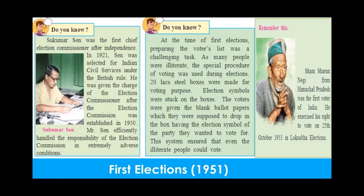He was given charge as Election Commissioner after the Election Commission was established in 1950. When the first elections were being conducted, there was a challenging task of preparing the voters list. Many people at that time were illiterate, so to make the process easier, a special system was adopted where 20 lakh steel boxes were made for voting and election symbols were stuck on the boxes.